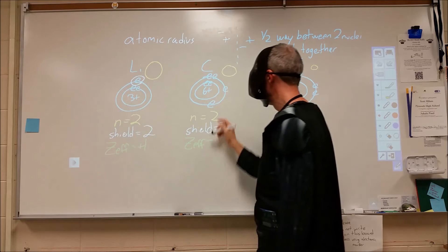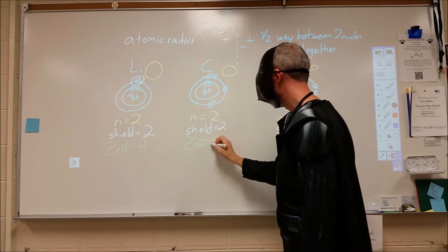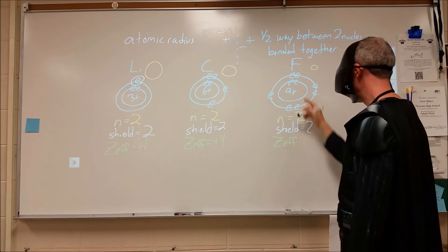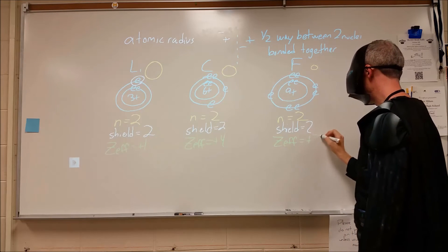Our effective nuclear charge here is six minus two, which would be plus four. And our effective nuclear charge here would be nine minus the two, which would be plus seven.